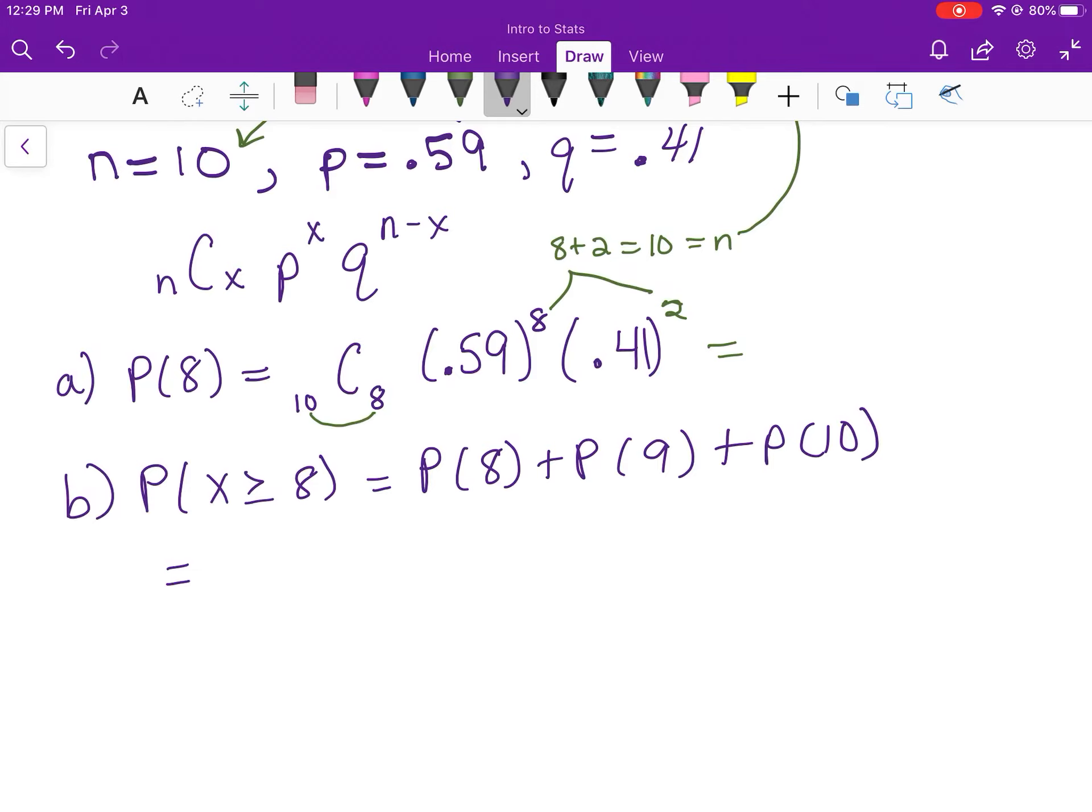So I'm going to go ahead and put that in my calculator real quick so I can write that down. 10 combination 8, and then times 0.59 to the 8th, times 0.41 to the second. So roughly 0.111. Now I'm going to go ahead and carry it out to six decimal places, so that would be 0.111070.